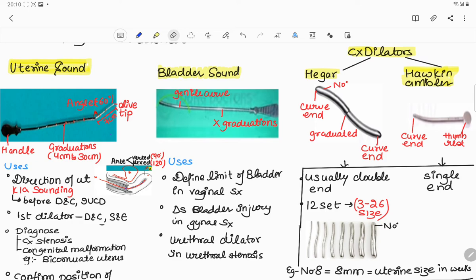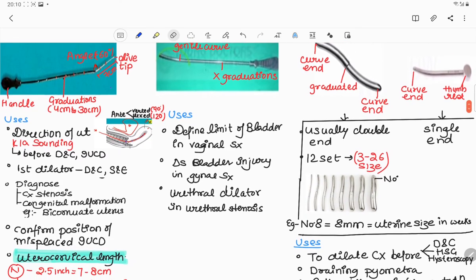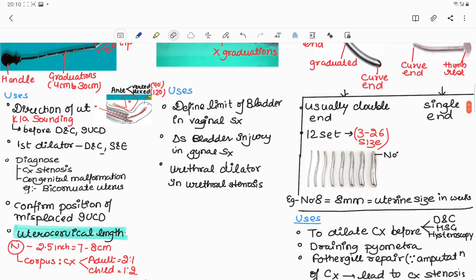There are two dilators. First is Hegar dilator and another one is Hawking Ambler dilator. Hegar dilators are curved at both ends and graduated. Hawking Ambler contains thumb rest at one end and curved at another end. Usually Hegar dilators are double-ended and Hawking Ambler is single-ended. There are 12 sets of Hegar dilator ranging from 3 to 26 in size. The number is also mentioned on Hegar dilator. What do you mean by a number? For example, if number 8 is written, it means an 8mm dilator equals to the uterine size in weeks.